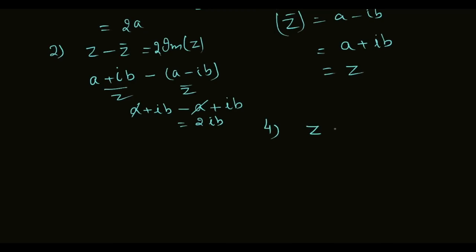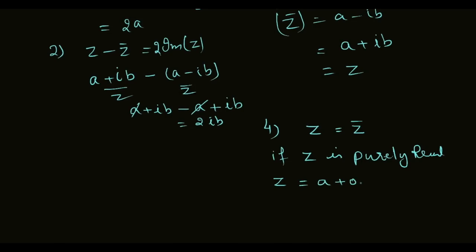The fourth property: if a complex number is purely real, such as z equals a plus 0 iota, then its conjugate is a minus 0 iota. Since 0 iota is nothing, z equals z conjugate when the complex number is purely real.